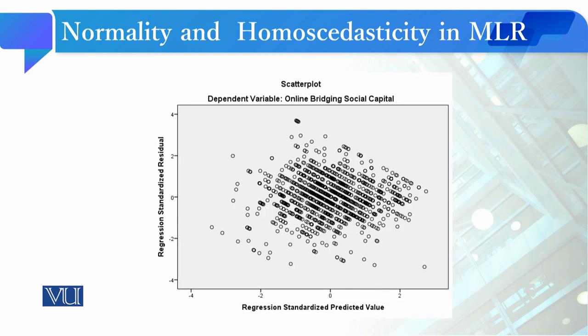The second graph is related to homoscedasticity. This graph is called a scatter plot, and we check the homoscedasticity assumption using the scatter plot.